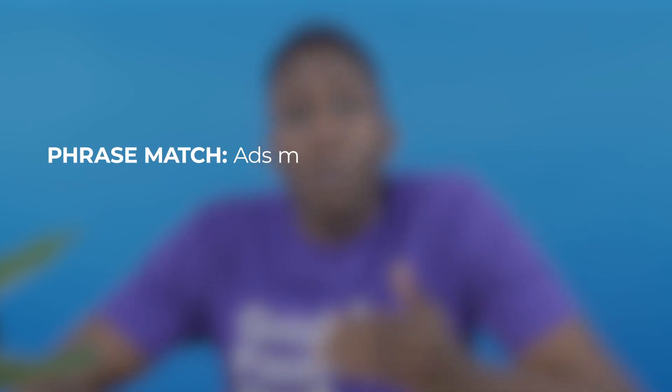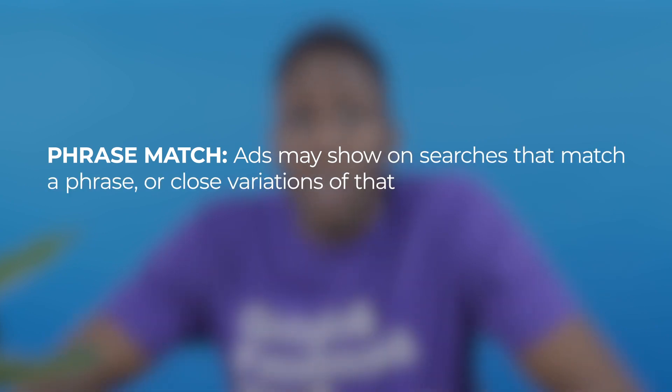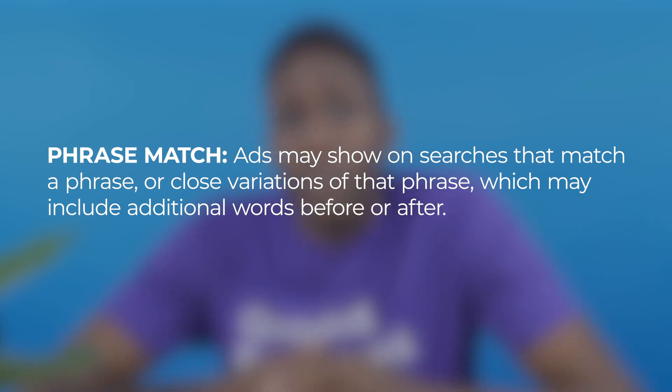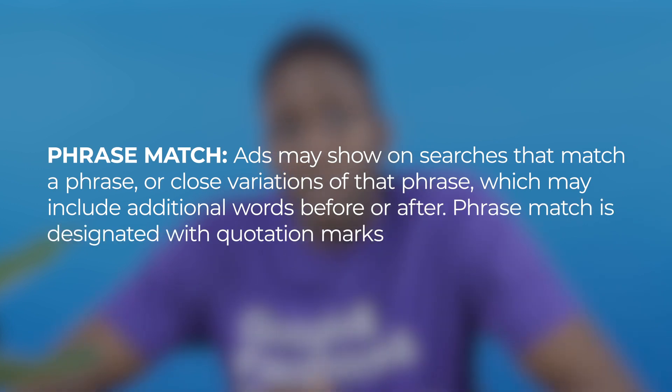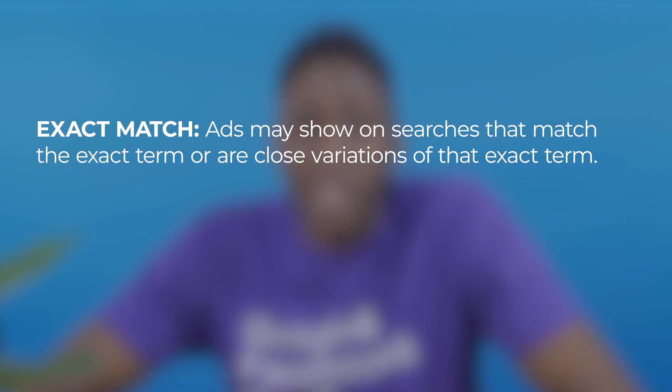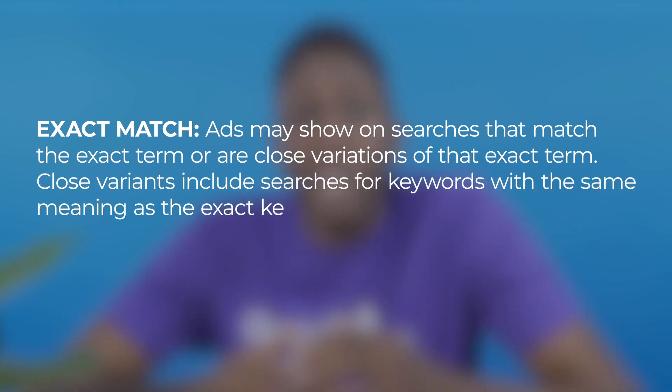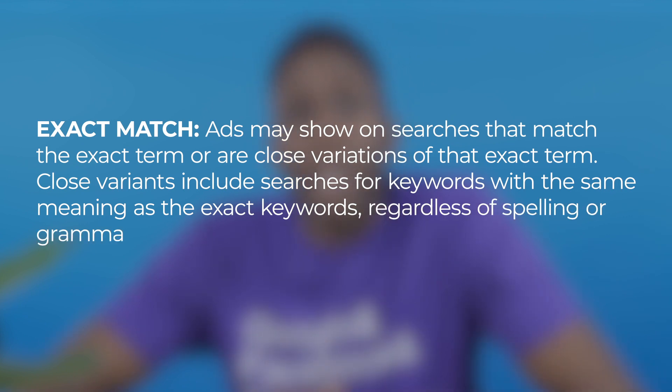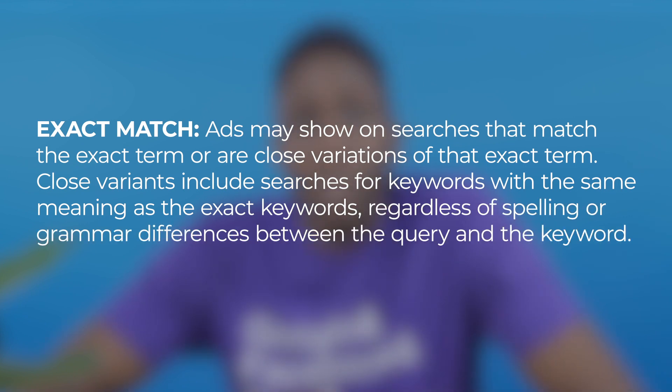Phrase match: ads may show on searches that match a phrase or close variations of that phrase, which may include additional words before or after. Phrase match is designated with quotation marks. Exact match: ads may show on searches that match the exact term or close variations, including keywords with the same meaning, regardless of spelling or grammar differences. Exact match is designated with brackets. So what's the best match type? It depends on your account goals and budget. For larger accounts, broad match modifier is likely best. For small to medium-sized businesses, phrase match. And with a super small budget, exact match is likely your best bet.